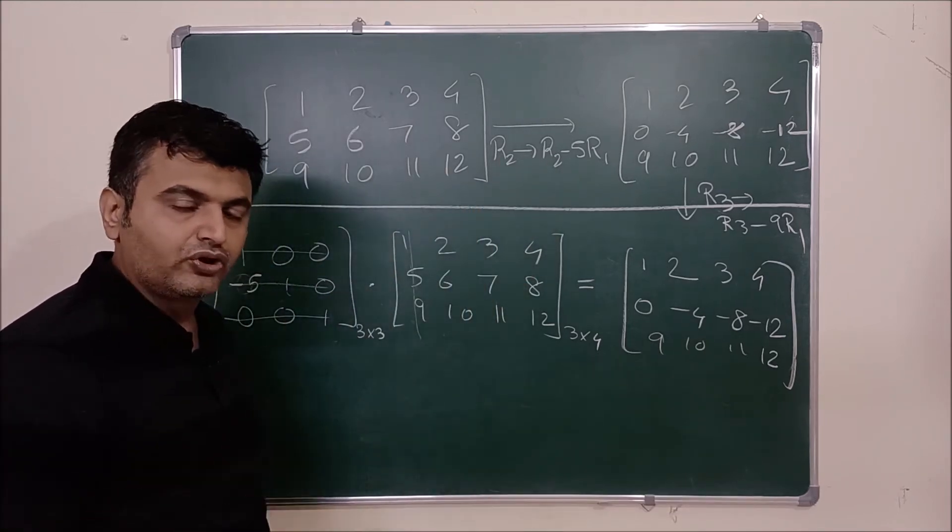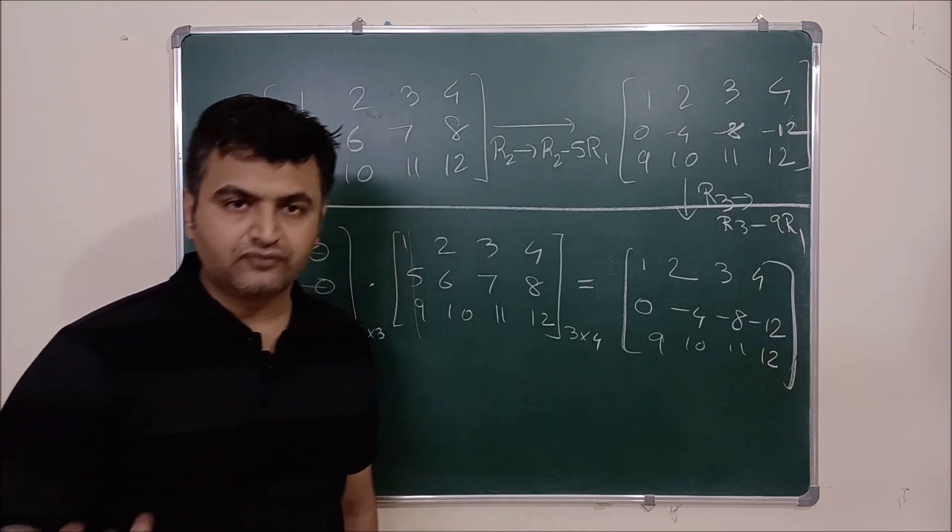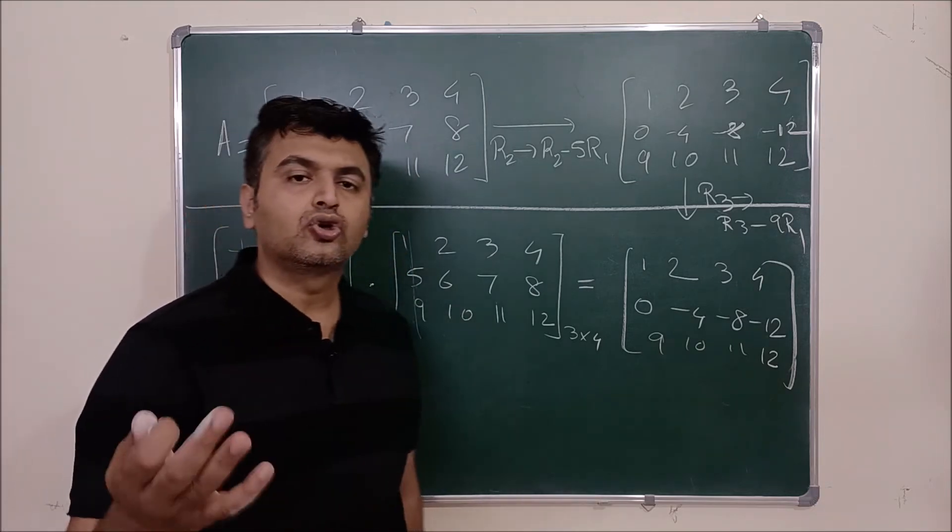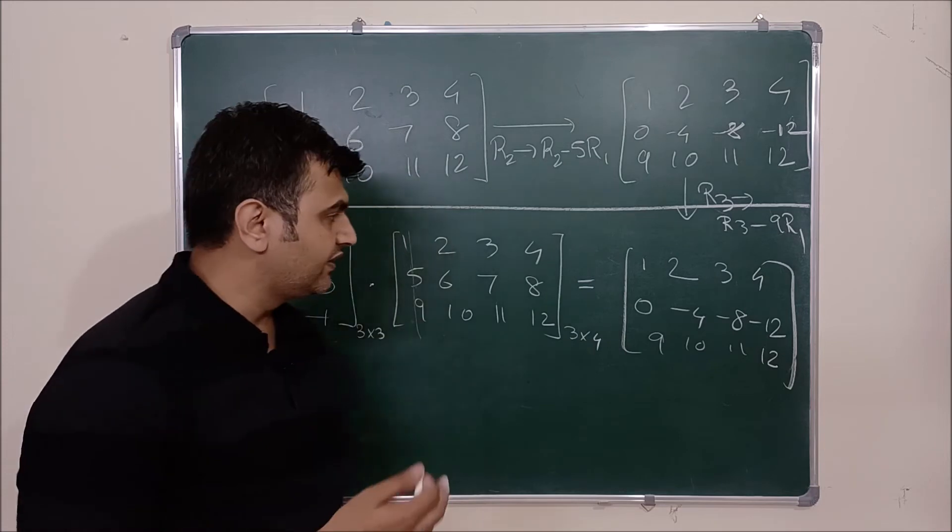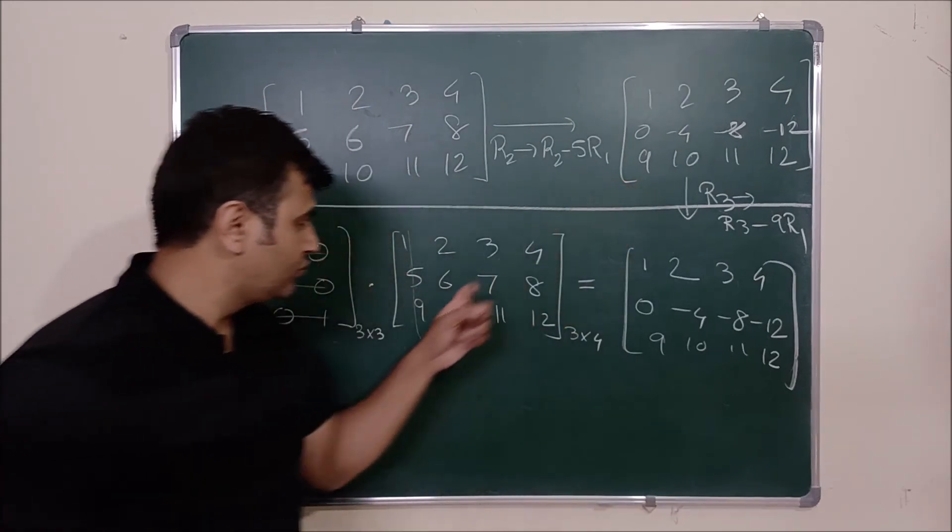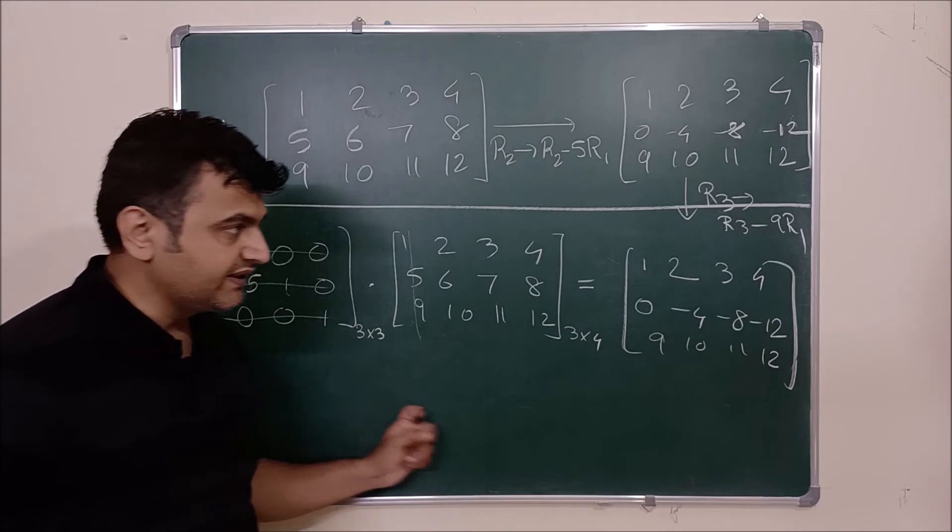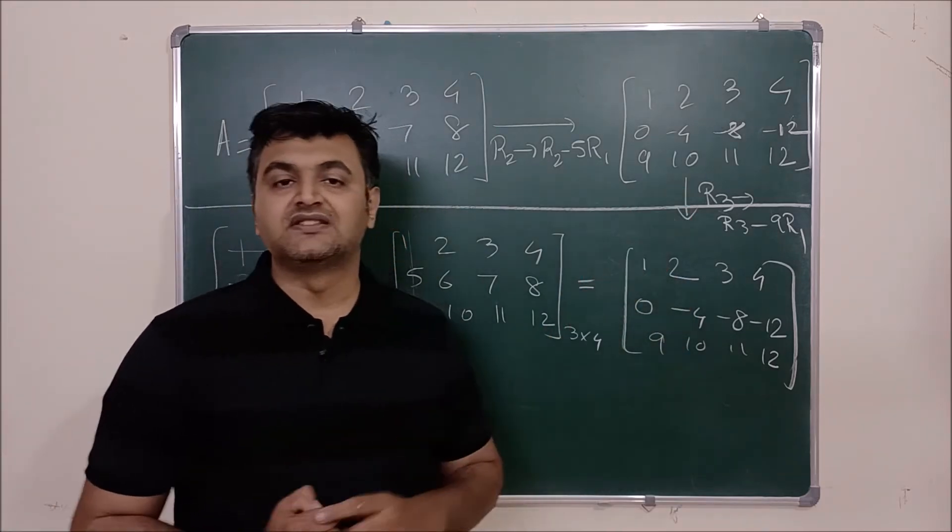Now you can pause the video. Take a whatever say 3 cross 4 matrix or let's say 2 cross 3 matrix and do whichever row operation you want and also do this pre-matrix multiplication and see whether you're getting a same answer or not.